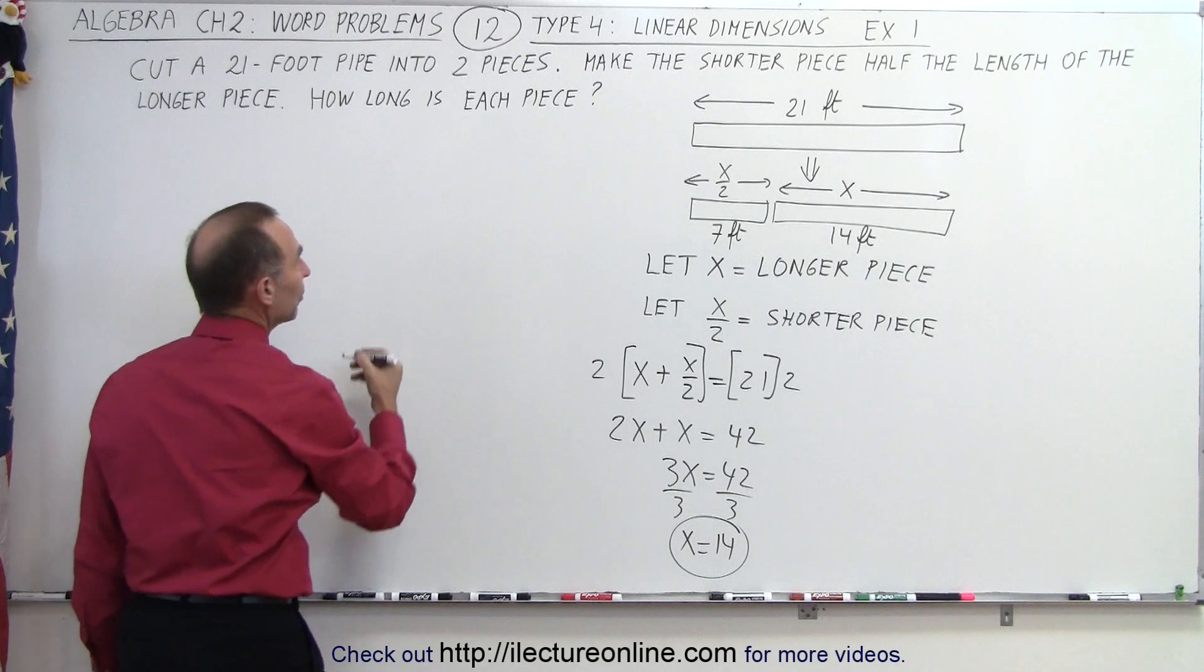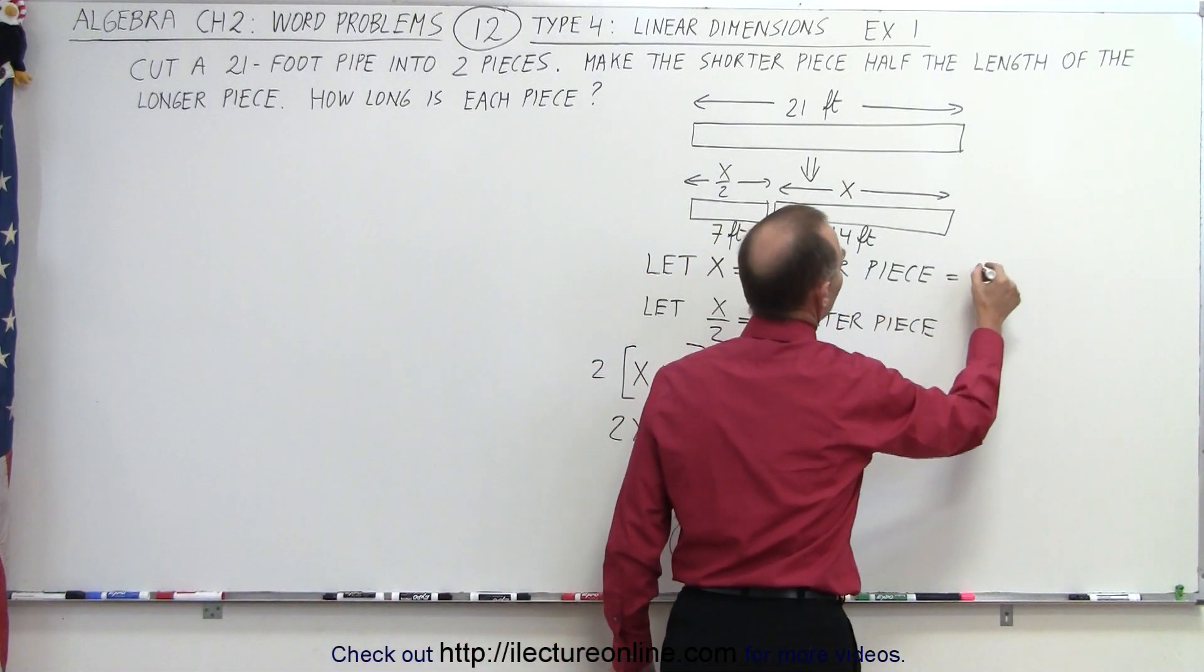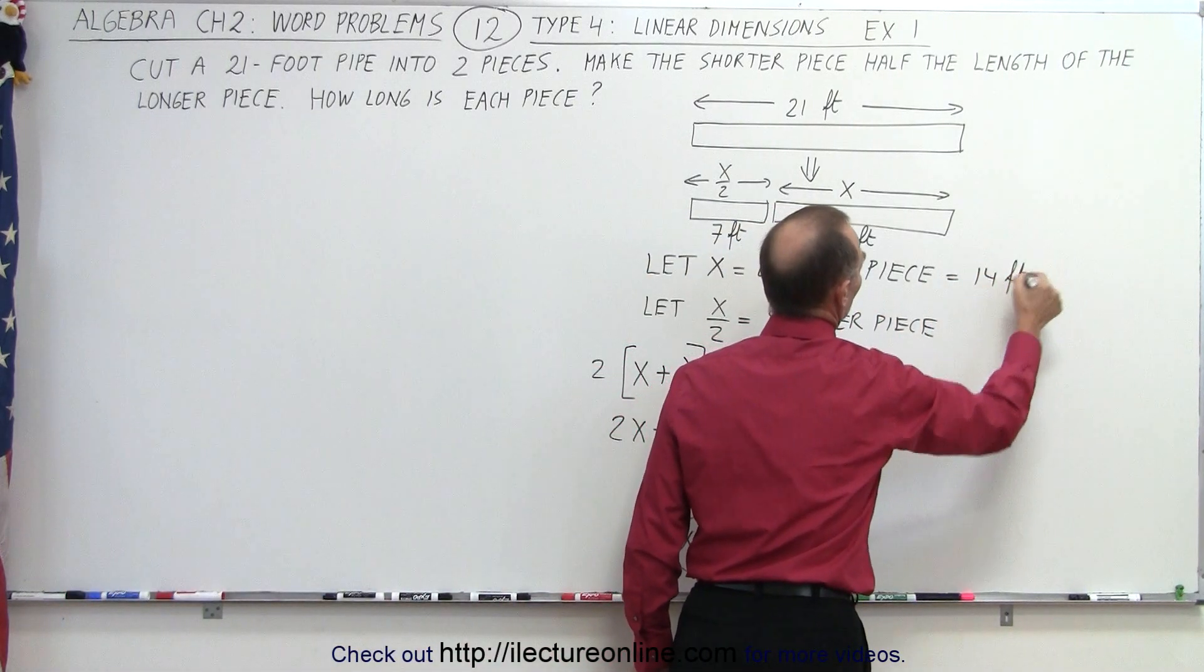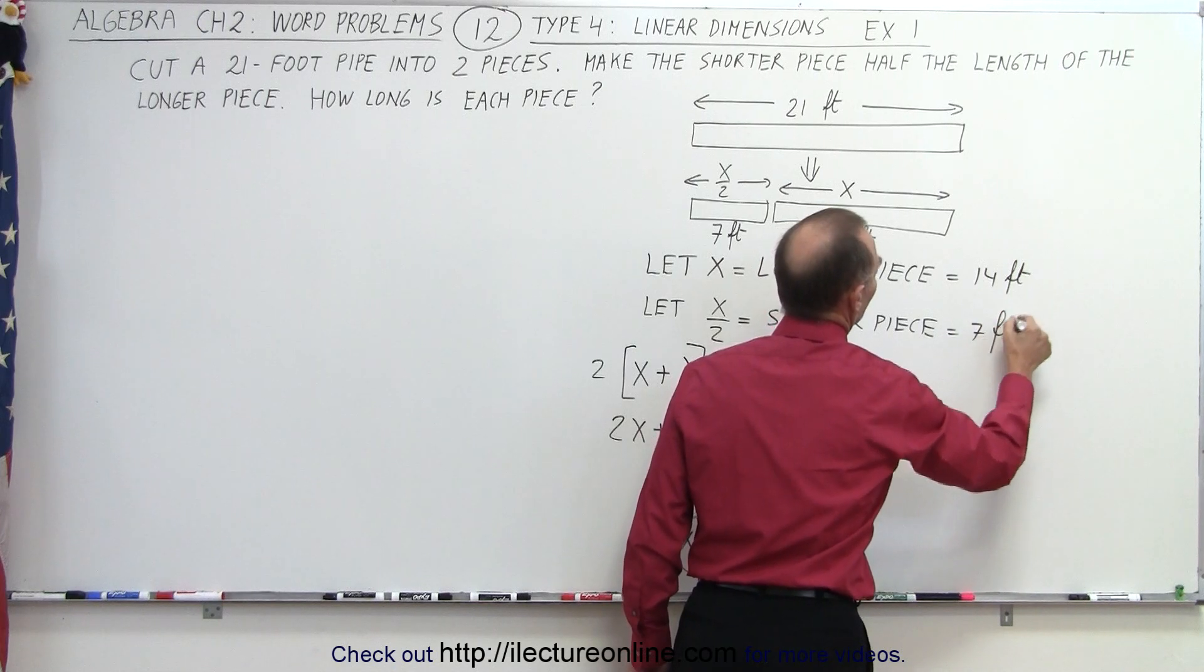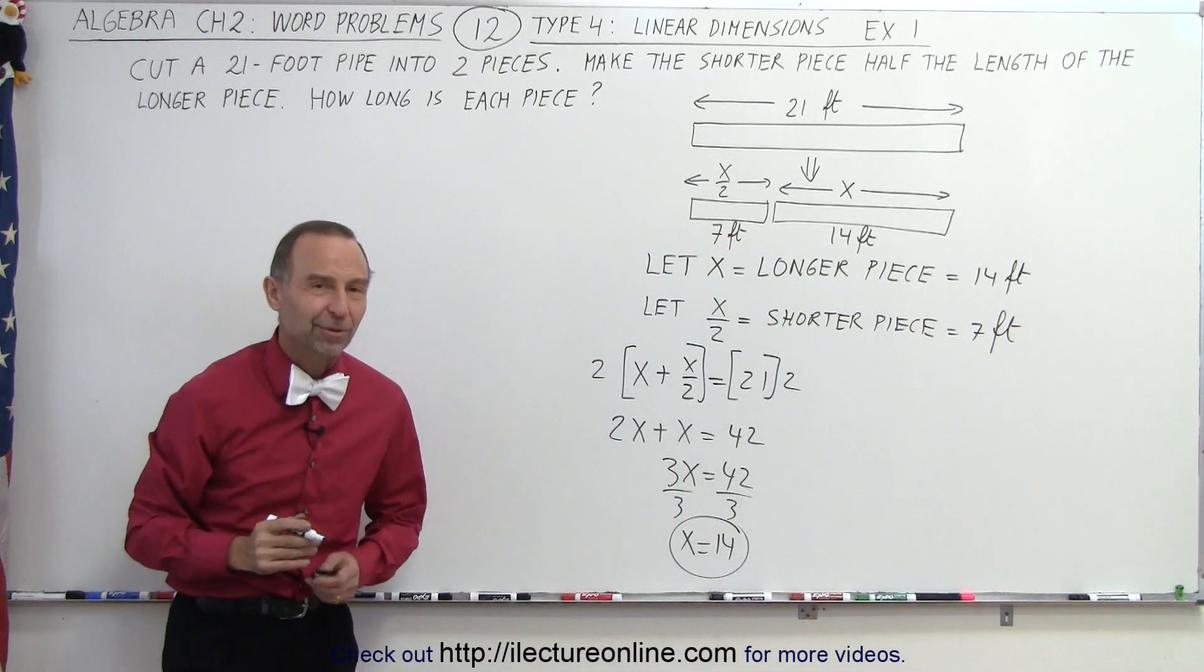So the answer is: the longer piece is equal to 14 feet, and the shorter piece is equal to 7 feet. And that's how it's done.